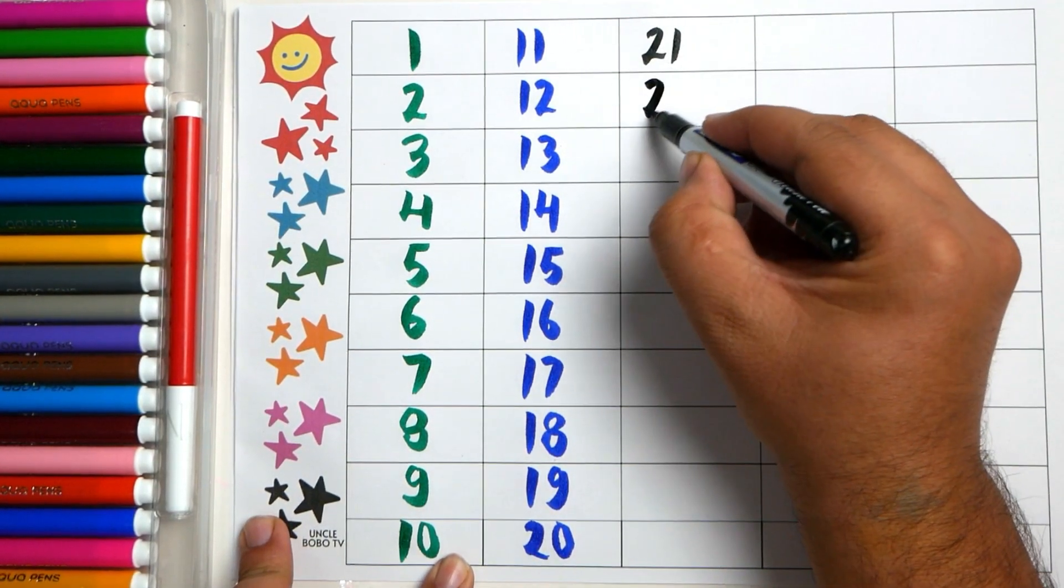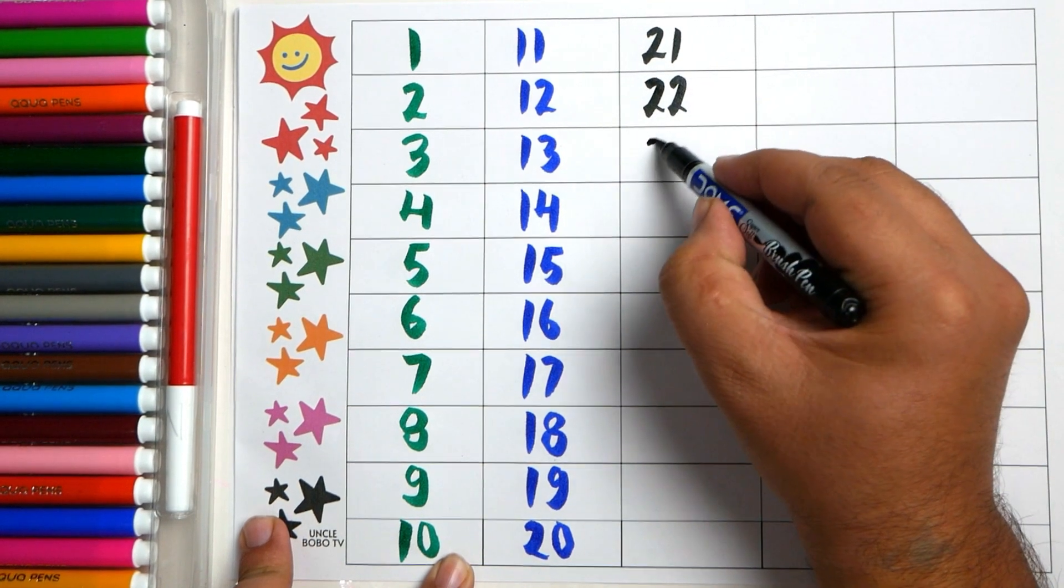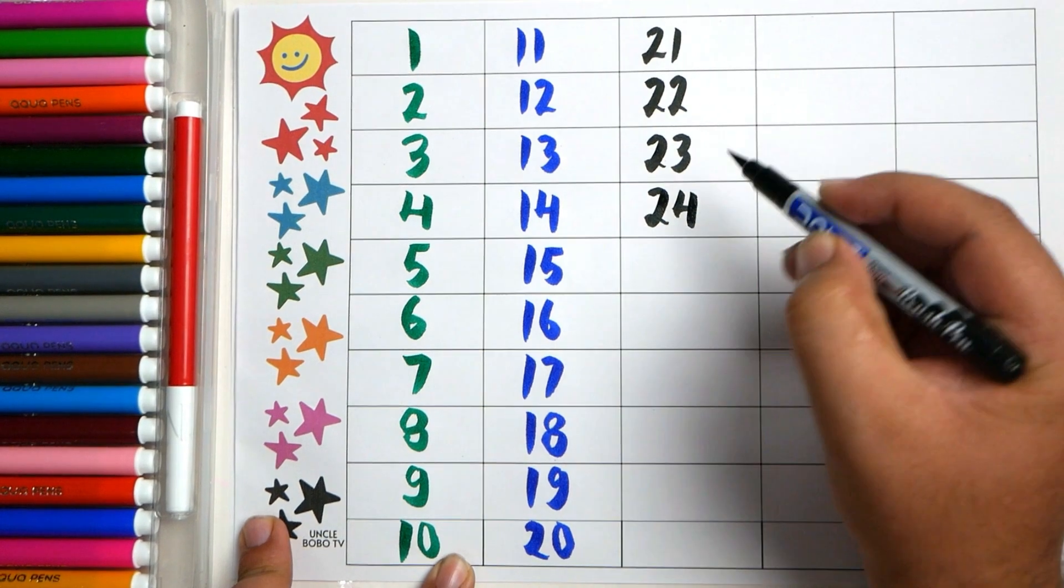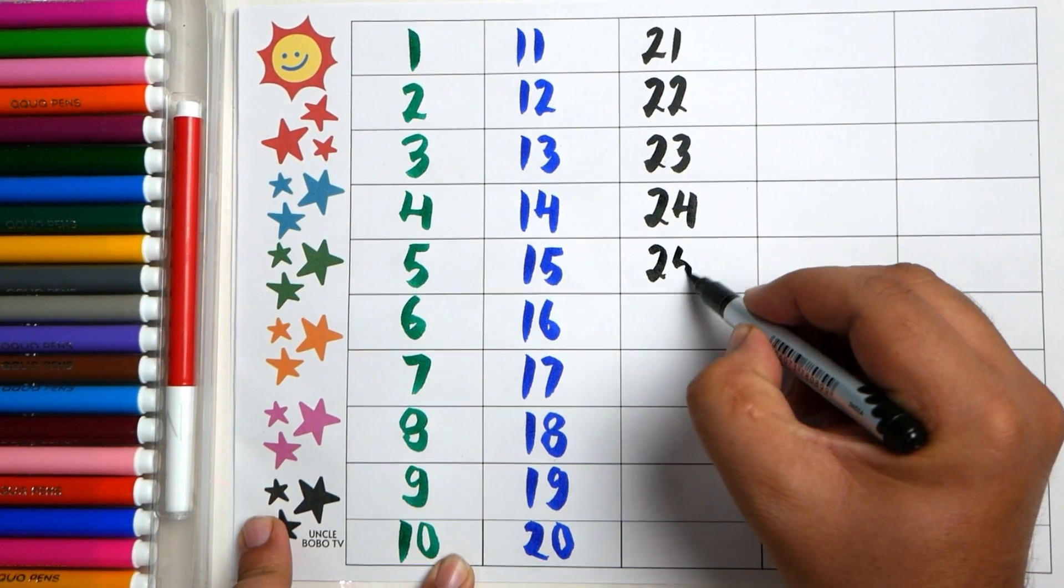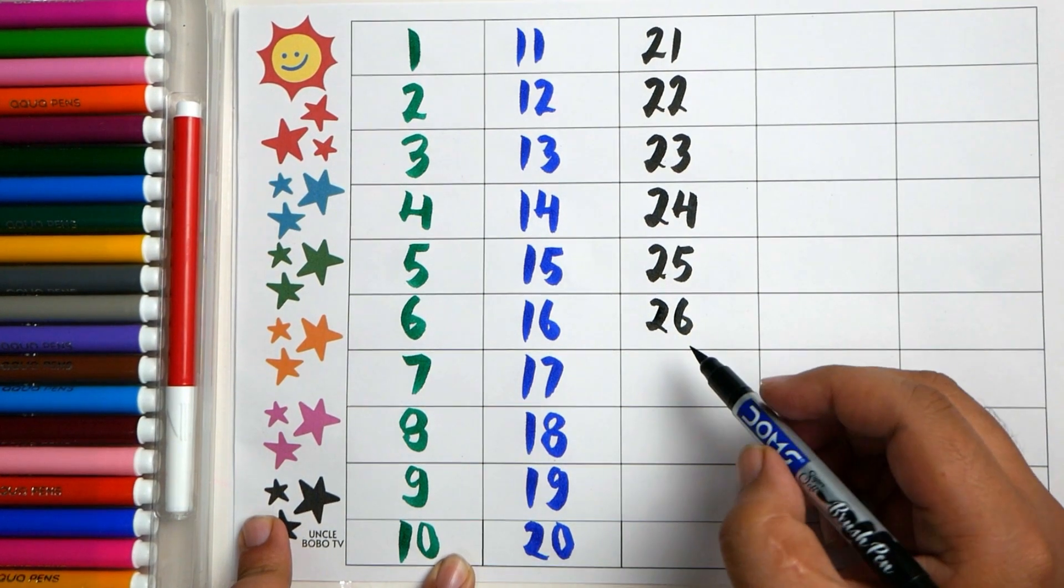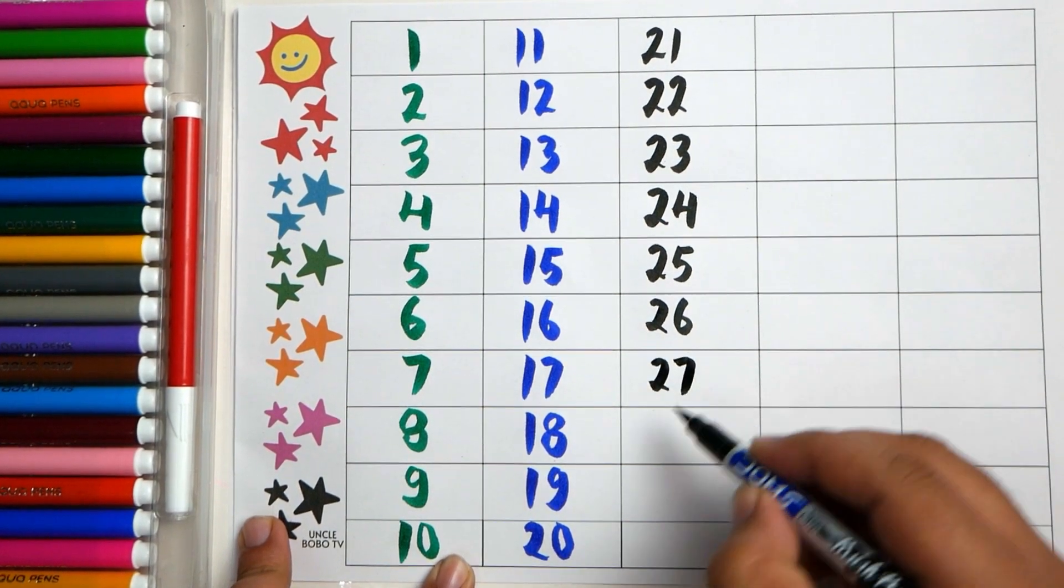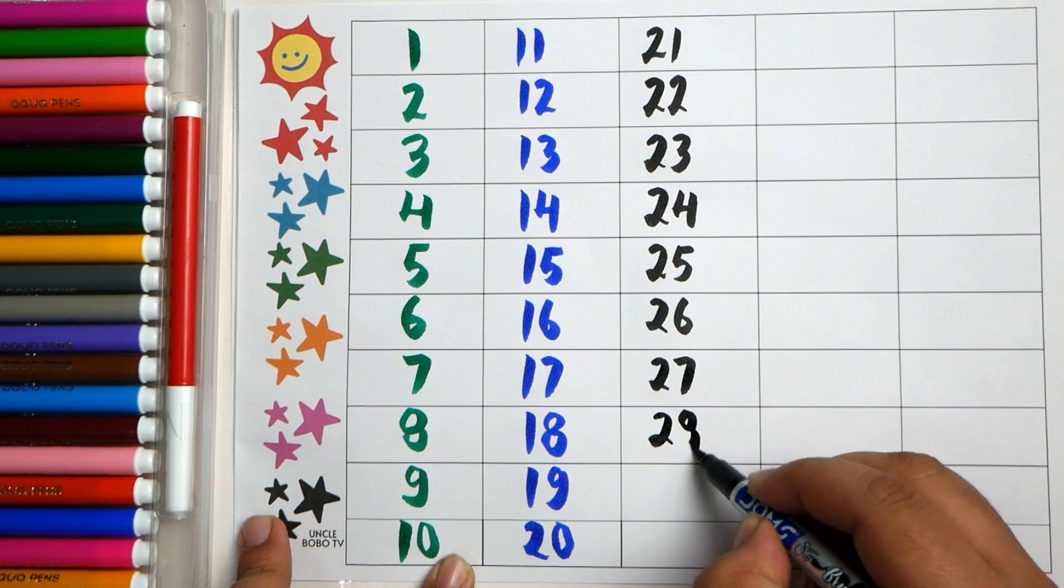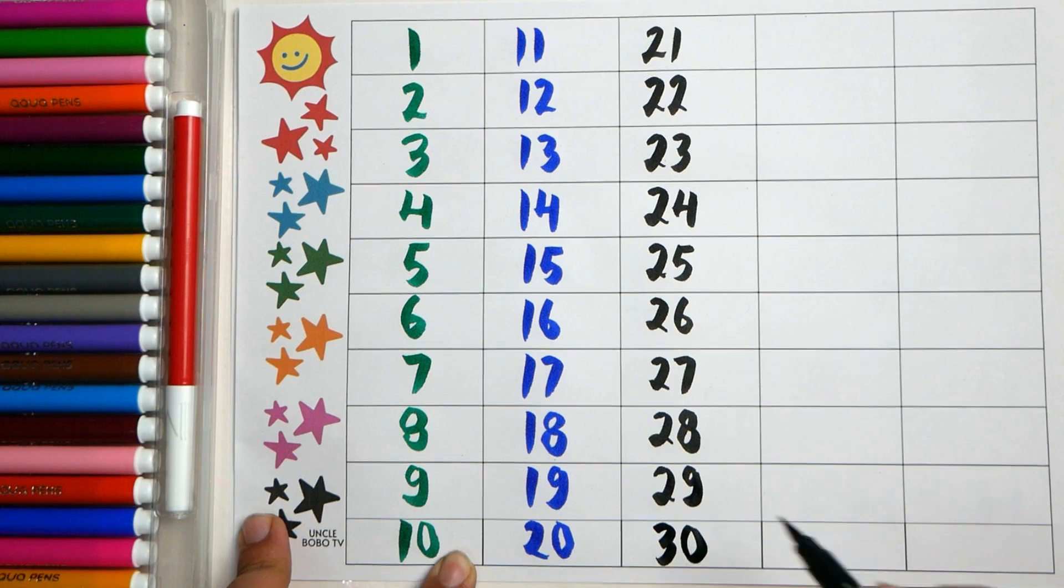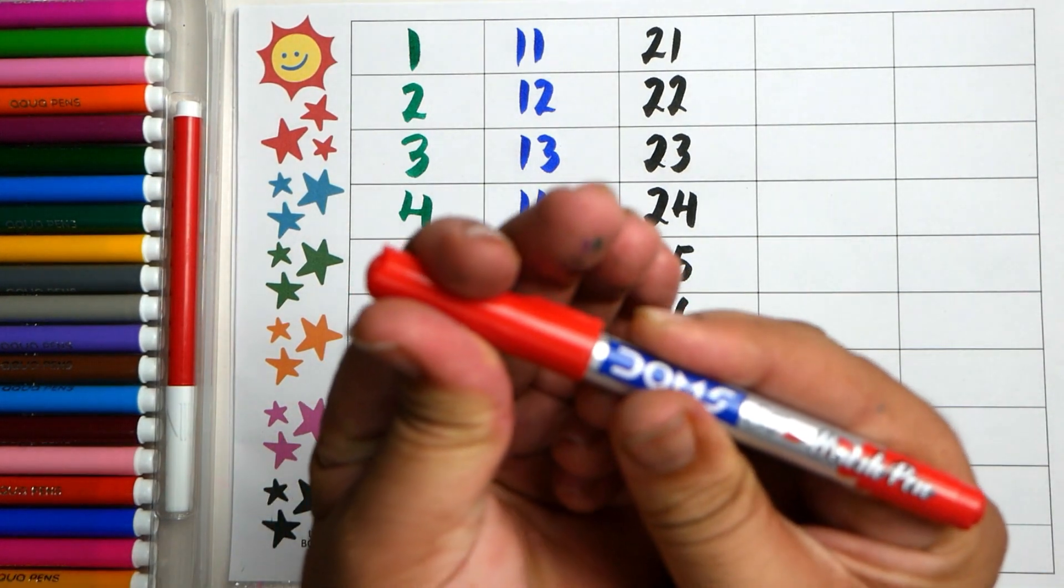Twenty-one, twenty-two, twenty-three, twenty-four, twenty-five, twenty-six, twenty-seven, twenty-eight, twenty-nine, thirty. Dark red color.